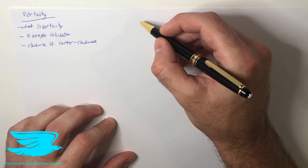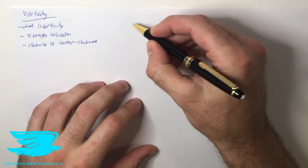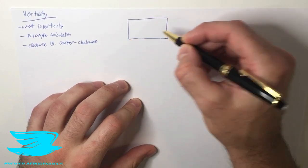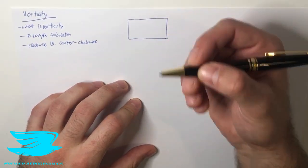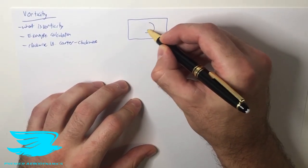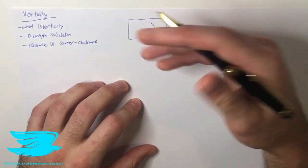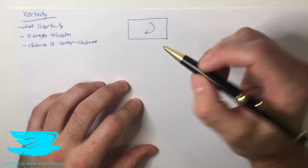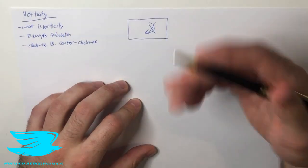For example, let's say we have our wind tunnel and it's coming at us, out of the page. We take a cross-sectional area of this wind tunnel and we have the fluid coming out and it's now rotating this way perhaps. This means that there is some rotation and that means there is vorticity. If there is no rotation, then the vorticity is zero.